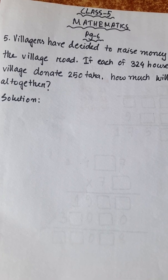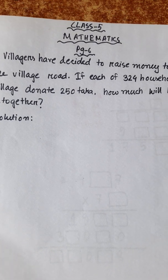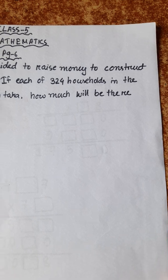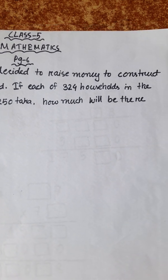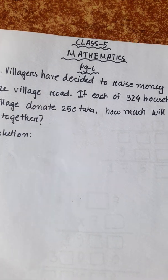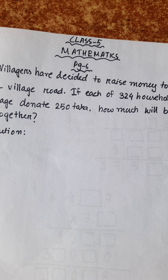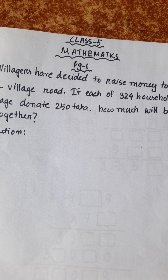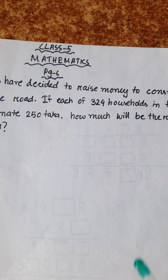That concludes Exercise 1. And the last math is a word problem, number 5. Villagers have decided to raise money to construct the village road. If each of 324 households in the village donates 250 Taka, how much will there be altogether? So this math is basically a simple multiplication word problem. How much Taka will be collected in total from 324 households giving 250 Taka each?